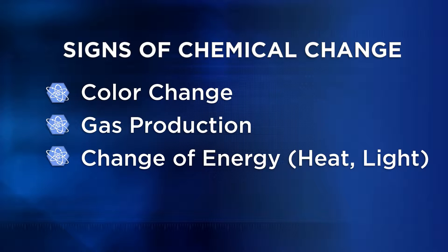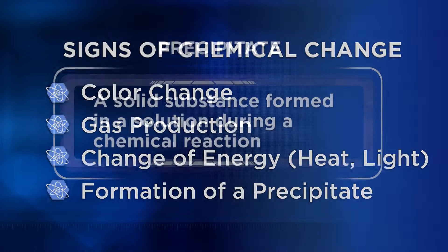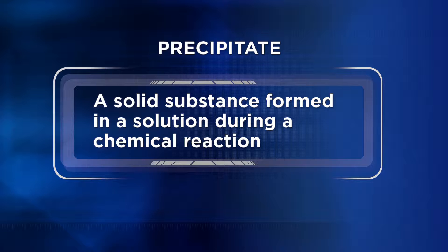A change in energy could also be light given off, like the fireworks we talked about in unit three. A fourth sign of chemical change is the formation of a precipitate — a solid substance formed in solution during a chemical reaction. This solution didn't produce a precipitate, but others often do. Keep that in mind as you work through this unit.